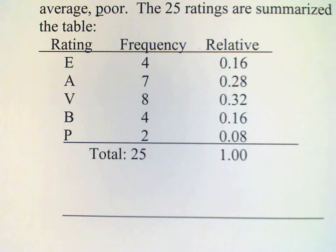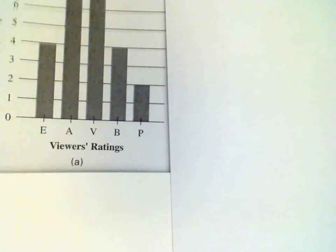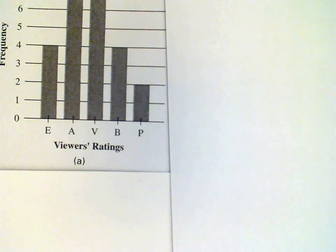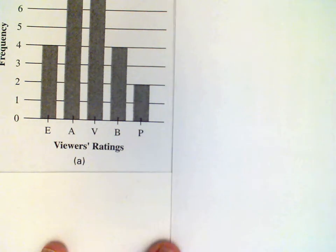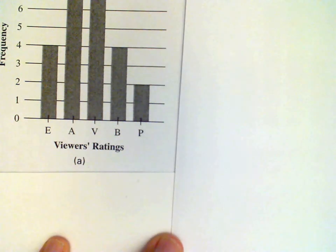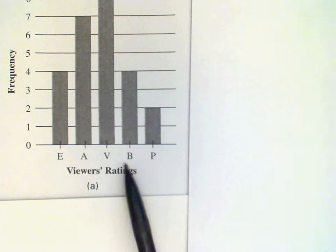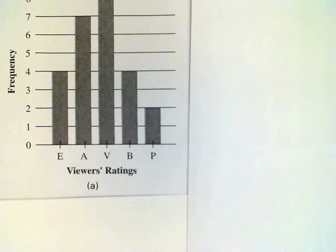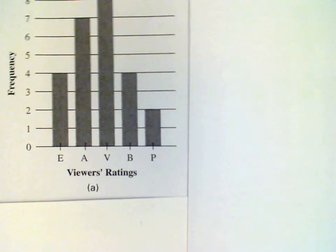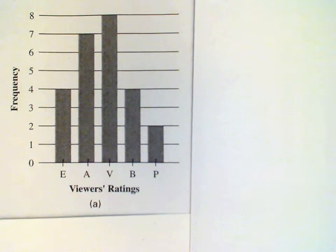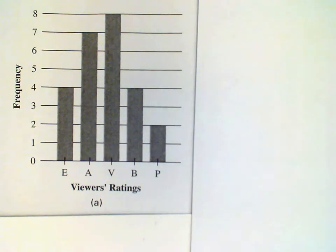Now let's look at a bar graph of this data. There it is. So we see for each of the responses E, A, V, B, and P, that we have a bar on the graph, and the height of the bar corresponds to the frequency of the response.